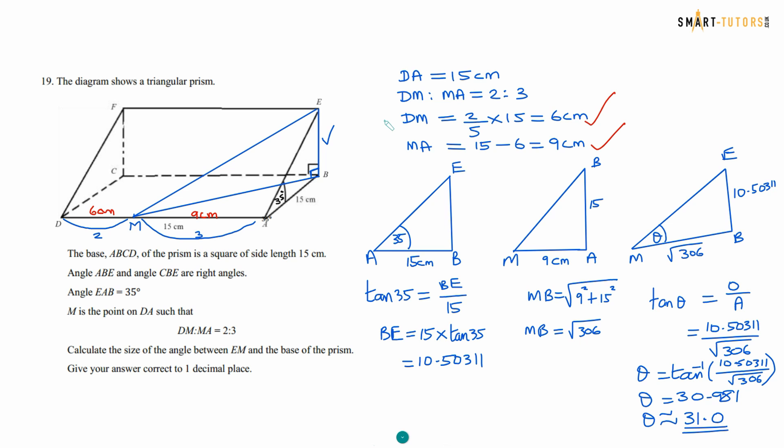So first of all I draw this triangle A, B, E. So with using the 35 angle and the 15 centimeter we can find the B, E. So that is ready. That is 10.50311. Then the next one is if you see the bottom triangle M, A, B which is I draw here. 9 is that one MA and this is 15. Use the Pythagoras theorem you can find the MB. So MB is also found and BE also found. This is the angle they are asking the theta. So that is the angle between the EM and the base. Base is the bottom one. EM is the line. So if you use the tan theta is opposite over adjacent, you can get the angle as 31 degrees.